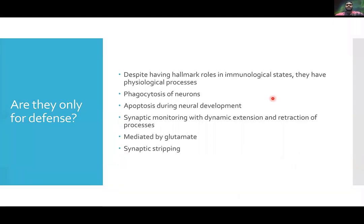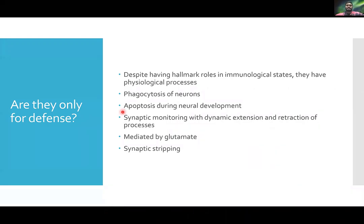Now, talking about the physiological functioning of microglial cells — are they only for defense? No. Despite having hallmark roles in immunological states, they have physiological processes as well, including phagocytosis of healthy neurons and apoptosis during neural development. If you remember from the brain facts book on the developing mind or the embryology video, you should be acquainted with pruning — the process of removing redundant synapses during development. Microglial cells, along with astrocytes, perform this function.